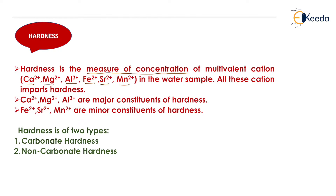All these cations impart hardness. The major constituents are calcium, magnesium, and aluminium; they impart a very large amount of hardness, which is why we calculate their concentrations and total hardness. We don't calculate the hardness created by Fe²⁺, Sr²⁺, and Mn²⁺ because they create very little hardness — they are known as minor constituents of hardness.